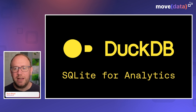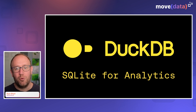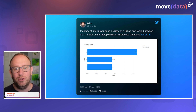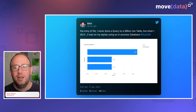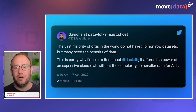DuckDB is really like the SQLite for analytics. SQLite has gained massive popularity because of its in-process architecture and its ability to handle transactional data, whereas DuckDB is getting to be very popular for its ability to do analytics. Here's a wonderful tweet: 'The irony of life — I've never done a query on a billion row table, but when I did, it was on my laptop using an in-process database, DuckDB.' And someone who retweeted that said: 'The vast majority of orgs in the world do not have billion row datasets, but many need the benefits of data.' That's why this person is excited about DuckDB — because it provides the power of a cloud data warehouse without the complexity. Small data for all.